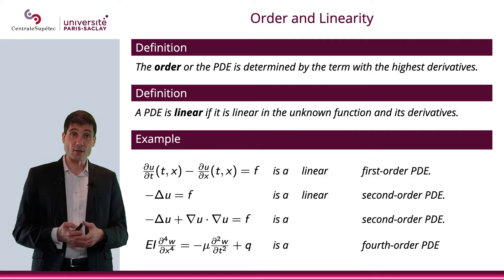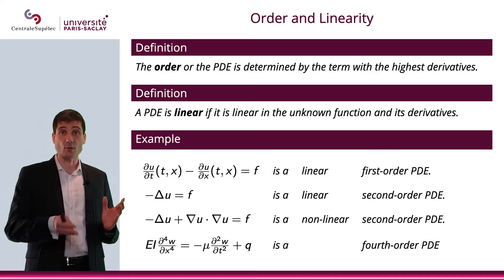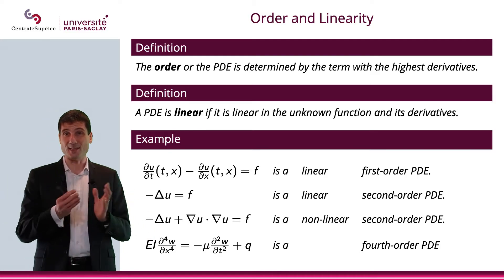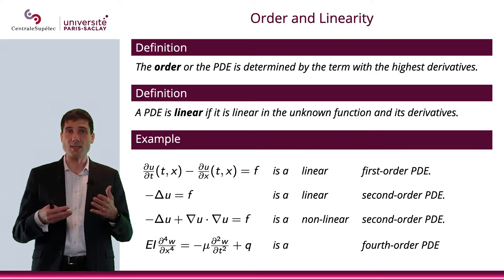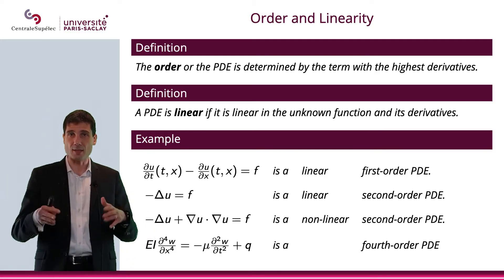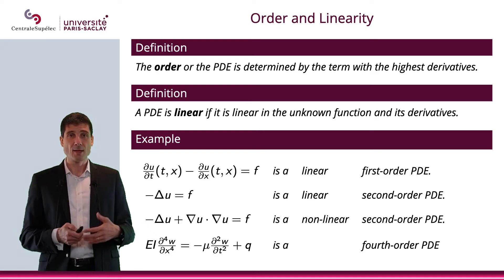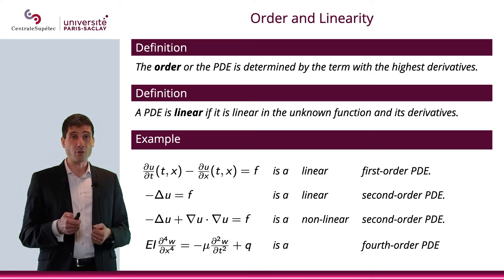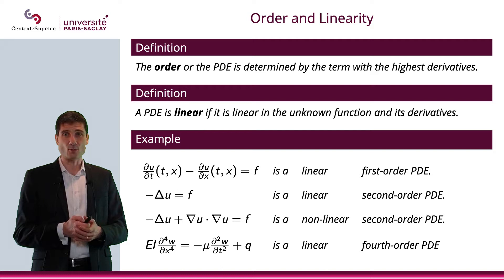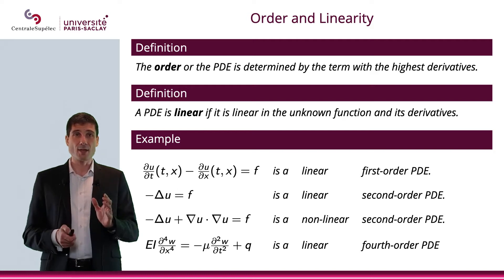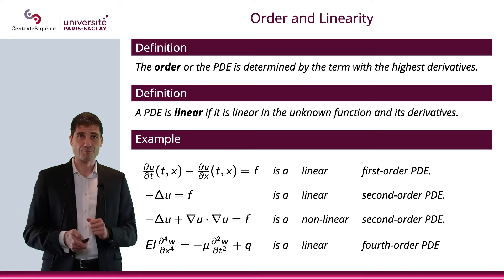However, the third equation is not linear because of the ∇u · ∇u term — that scalar product makes it non-linear, as you can verify. The fourth equation is linear as well. So, that covers order and linearity.